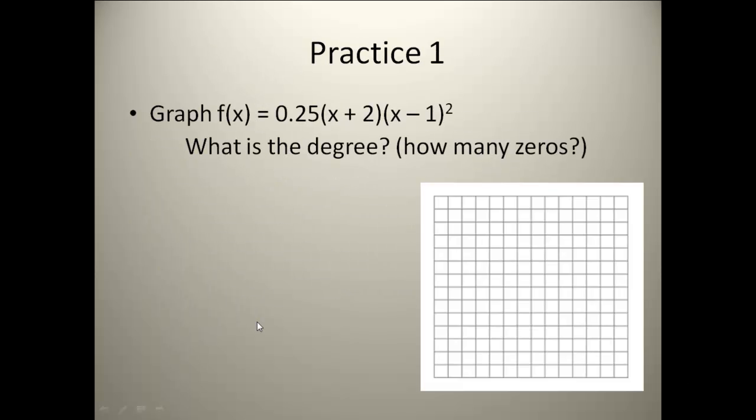Here's our first practice problem. We need to graph f(x) = 0.25(x + 2)(x - 1)². First thing we need to do is identify what is our degree. Now this one doesn't come out and just tell you the degree because it's in factored form. But if you think about x plus 2 times x minus 1 times x minus 1, I have three x's here that are going to be multiplied together, which would give me an x³. So my degree is going to be 3.